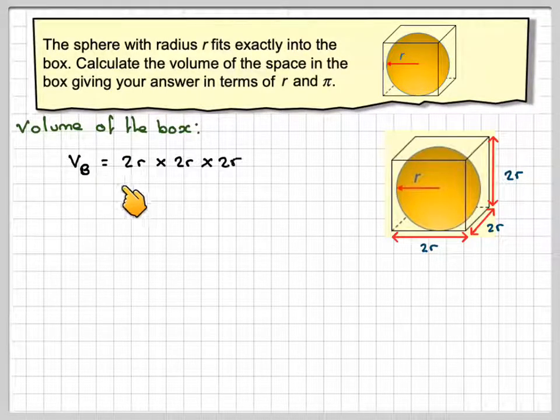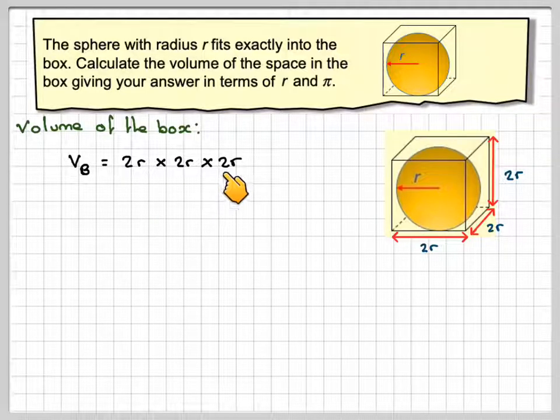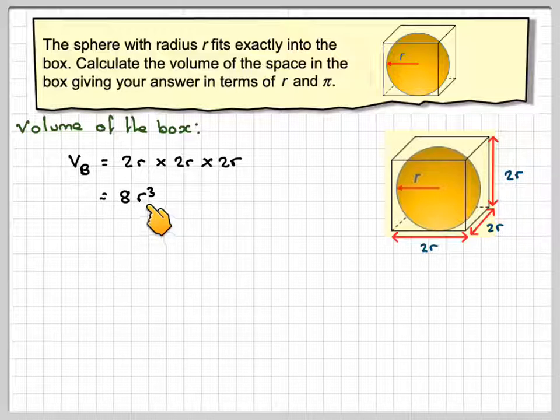The volume of the box, Vb, will be 2r times 2r times 2r. That's 2 times 2 times 2, which is 8, and then r times r times r, which is r cubed.